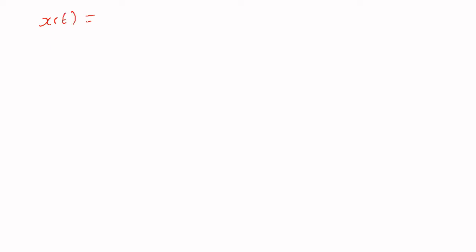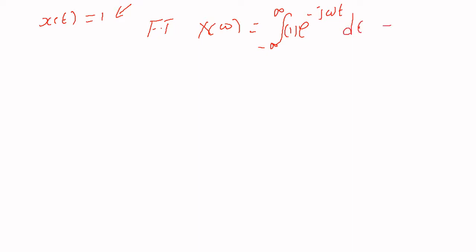Good morning. Today we are going to study an interesting topic. A classmate asked me to find the Fourier transform of 1. This is a simple-looking problem, but on a straightforward approach, you apply the Fourier transform definition and get X(ω) = integral from minus infinity to infinity of e^(-jωt) dt, which gives an invalid or infinite answer.